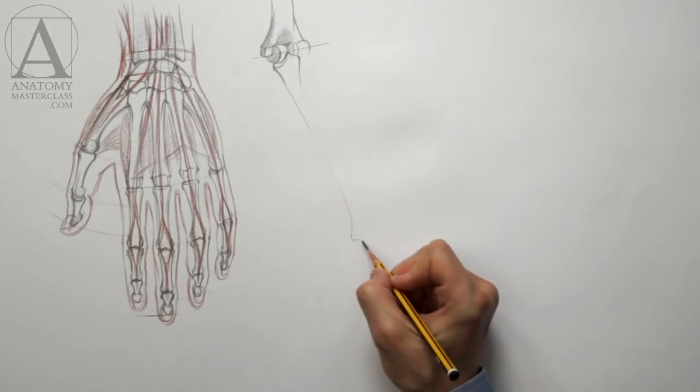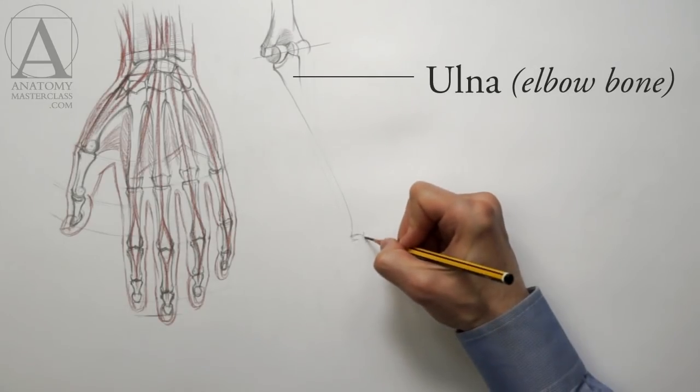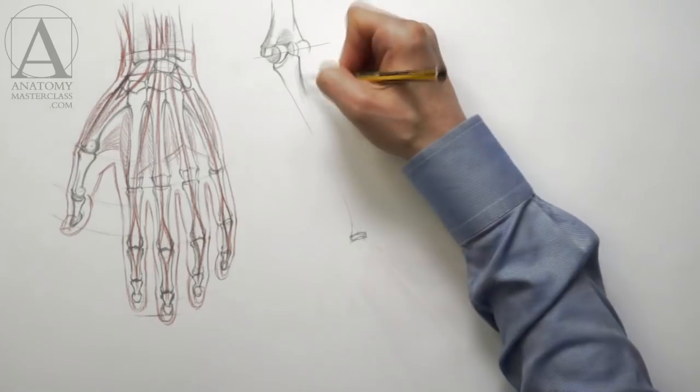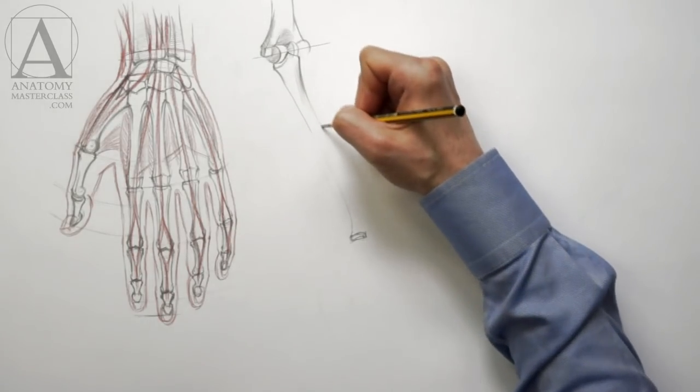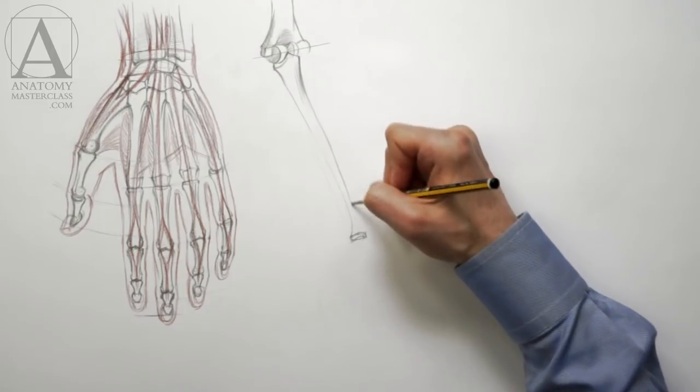The spool-shaped part connects with the ulna, which is the elbow bone of the lower arm. The elbow joint is called a hinge joint because the ulna swings at the lower end of the humerus like a hinge.